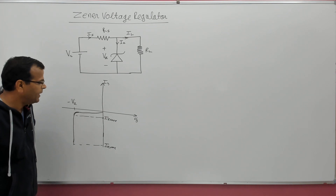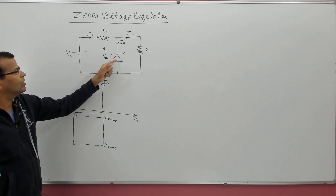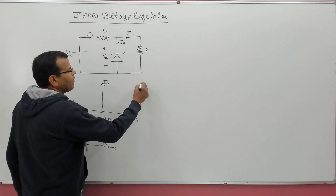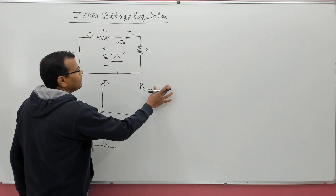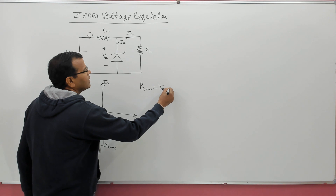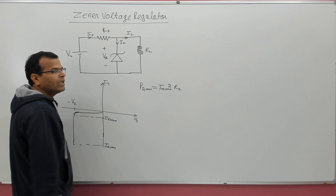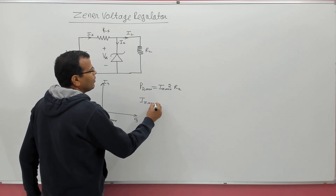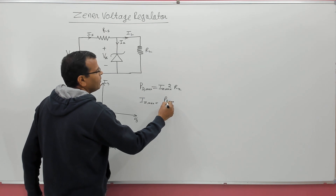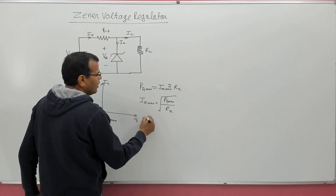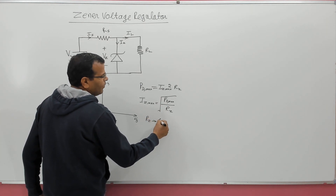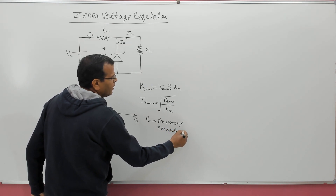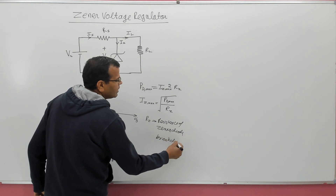The resistance of the diode will vary. The maximum current through the Zener diode depends upon the maximum power dissipation capability of the diode. If maximum power dissipation capability is given, it must equal IZ_max squared into RZ, where RZ is the resistance of the Zener diode under reverse bias mode. So IZ_max = sqrt(Pd_max / RZ), where RZ is the resistance of the Zener diode in the breakdown region.